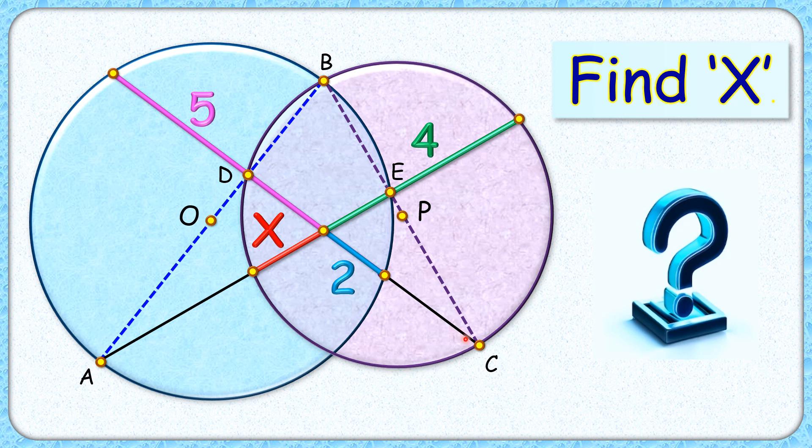Further, the lines D and C are joined together, and A and E are joined together. With the given length of this pink line segment as 5 centimeters, green line segment as 4 centimeters, and blue line segment as 2 centimeters, we have to find the length of this red line segment.